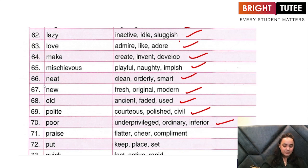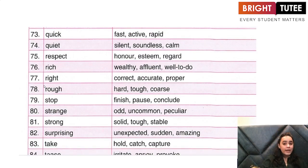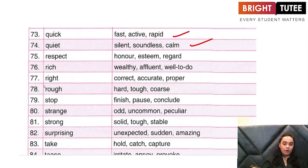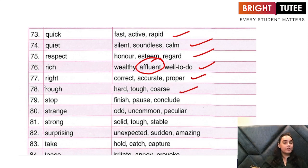'Praise' — flatter someone, cheer someone, compliment someone. 'Put' — is to keep something, to place something, to set something. 'Quick' — is fast, active, rapid. 'Quiet' — is silent, soundless, calm. 'Respect' — is honor, esteem, regard. 'Rich' — is wealthy, affluent, well-to-do. 'Right' — is correct, accurate, proper. 'Rough' — is hard, tough, coarse.